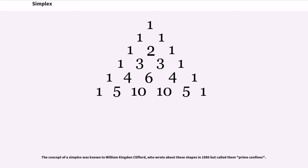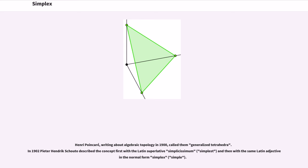The concept of a simplex was known to William Kingdon Clifford, who wrote about these shapes in 1886 but called them prime confines. Henri Poincaré, writing about algebraic topology in 1900, called them generalized tetrahedra. In 1902 Peter Hendricks Schoute described the concept first with the Latin superlative simplicissimum and then with the same Latin adjective in the normal form simplex.